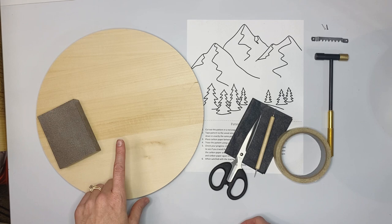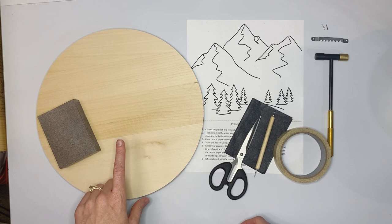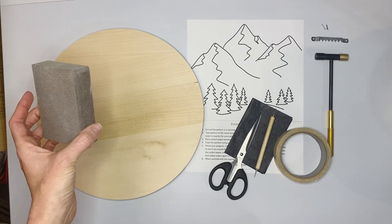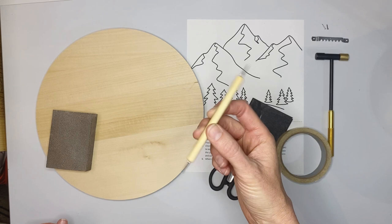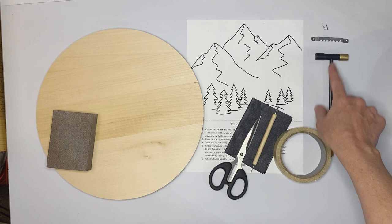For this project we are using a large 12 inch basswood circle. We'll be using a sanding block, some scissors, carbon paper, a tracing tool. If you don't have this you can use a pen or a pencil, some tape, of course your pattern, and a hammer to hammer in the nails for your sawtooth hanger.